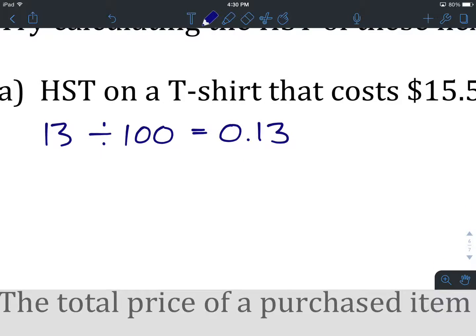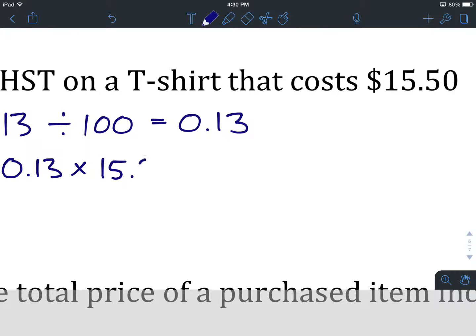Now, we take that decimal, this is step number two, and we multiply it by whatever the cost of the item is that we're trying to buy. In this question, it's a t-shirt that costs $15.50, and that's what we're going to type into our calculator. 0.13 times 15.50, and that's going to give us 2.015.